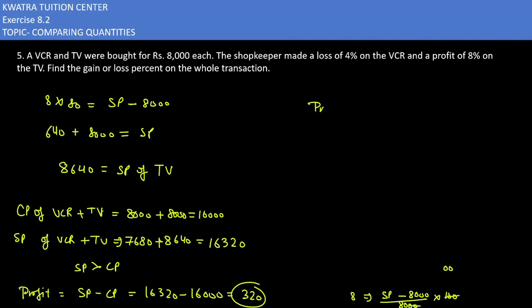Profit percent, use the formula. Profit percent, what do you do? Profit over CP into 100. Profit is 320 for the overall transaction.